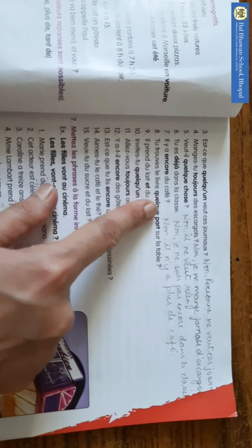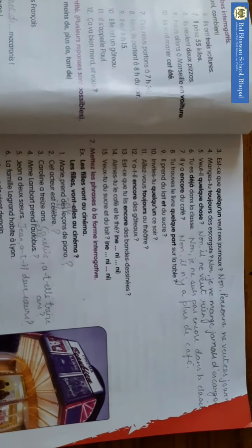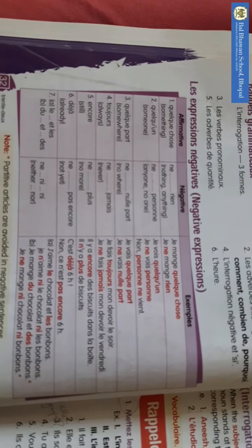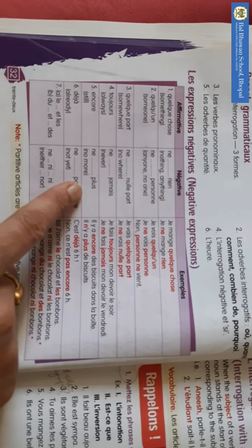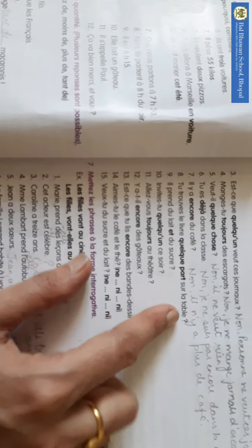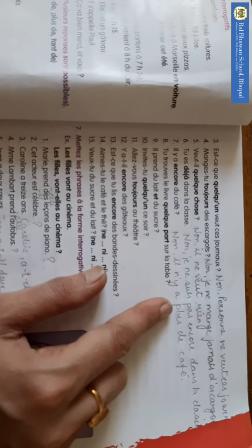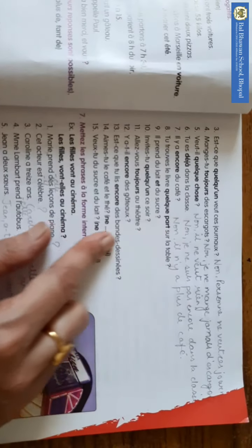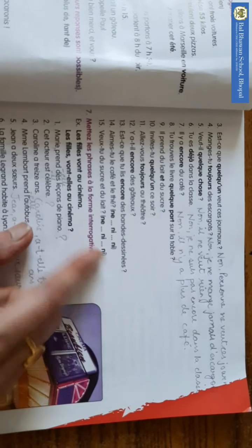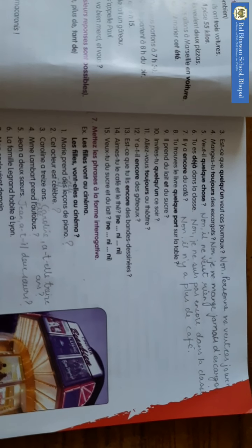Il y a encore du café? What is encore? Still. So negative expression will be no, plus. So the answer will be no, il, na, plus, the, kafe. Fine. So I have done these seven. Rest of these, you have to do by yourself by looking at that table.